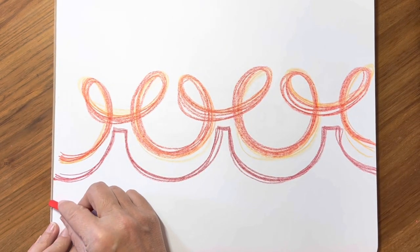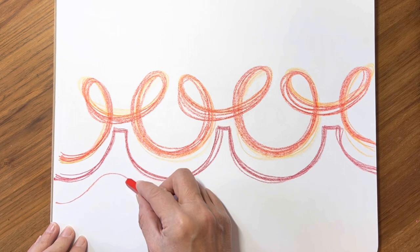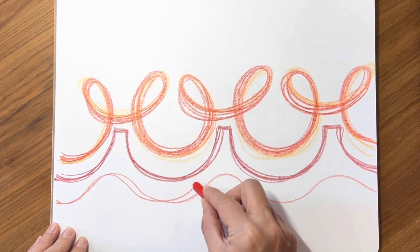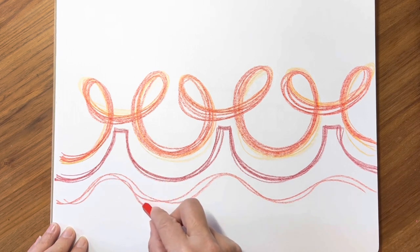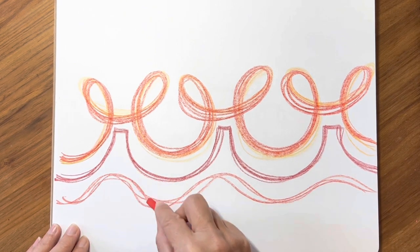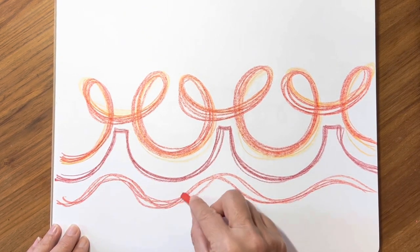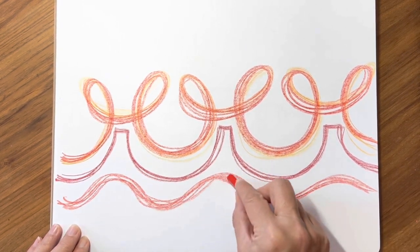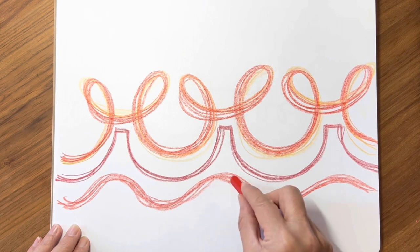Then we're going to make some little waves up and up and up, and we're going to go over those feeling what that flow feels like. When we're ready, we're going to make some loops on the top hanging from the ceiling.